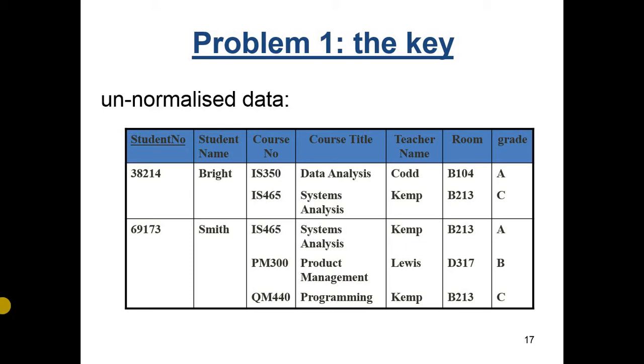Problem one, making sure that there is a key for every item of data. Here's our data unnormalized. I've underlined the student number column, but you can see that there are groups of what we call repeating data here. That is, past the first two columns, everything has got multiple items of data for a single student. So the student number cannot possibly work as a primary key for this data. We have a problem with some data with no primary key.